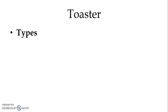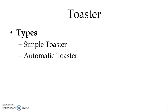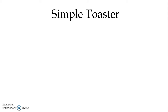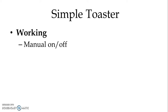Now let us study different types of toaster. We have broadly two different types: one is the simple toaster, and another type is the automatic toaster. First, let us study the simple toaster and the working of the simple toaster.